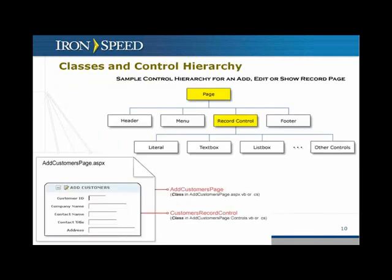When we generate the code, we generate a number of controls and classes. Let's take a sample page — in this case, an add customers page. We have what's called a record control, meaning a customer record that you're adding, as opposed to a table control where you're displaying or editing data in a tabular format in rows.